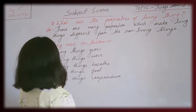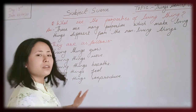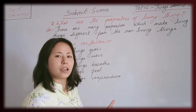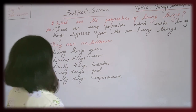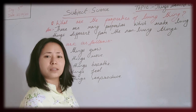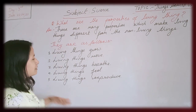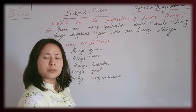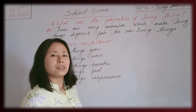First, living things grow — whatever is a living thing, it grows. Second, living things move — living things can move from one place to another. Third, living things breathe — whatever is a living thing, it breathes. Fourth, living things feel — living things can feel things like warmth and air. Fifth, living things reproduce — whatever is a living thing, it can give birth to another like itself. Animals, humans, and plants all reproduce, though each has a different method.